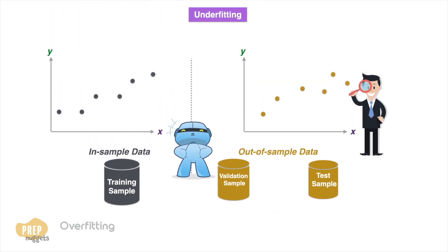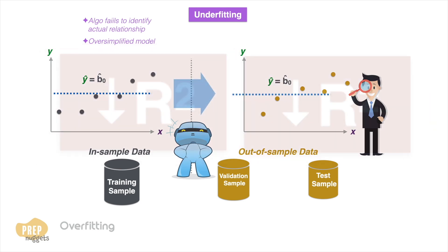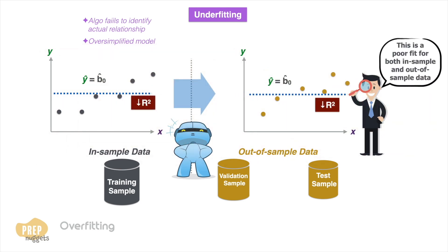Underfitting occurs when the algorithm fails to identify the actual relationship, often due to an oversimplified model. Such a model will have a poor fit for both in-sample and out-of-sample data.